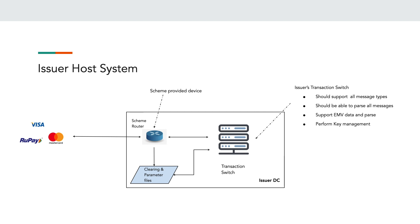The issuer transaction switch should support all types of authorization messages, parse the messages, handle key management, parse EMV data, and respond back to the schemes. The issuer host system should also be able to process the clearing and parameter files received from the scheme, and use them for authorization processing and settlement purposes. The issuer host system comprises a transaction switch for real-time authorizations and should also be able to manage the clearing file from the schemes.